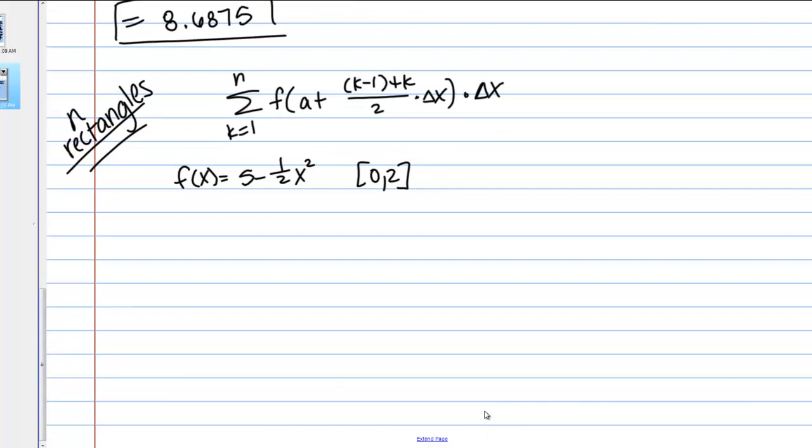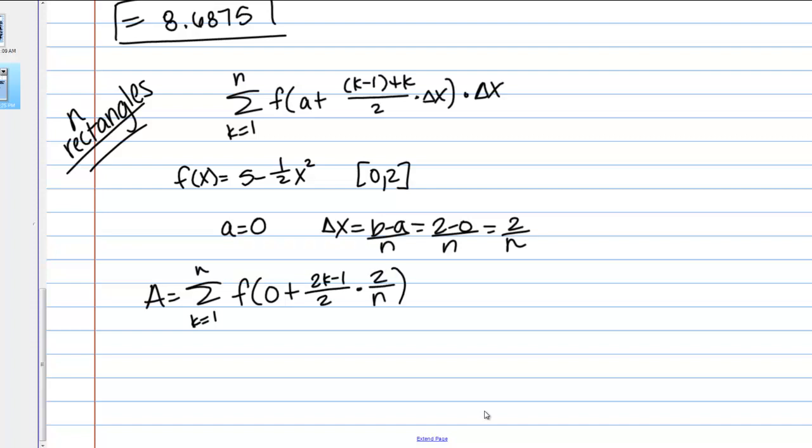Then, if I plug in my information, I'm going to have still A equals 0, and let's figure out delta X. Delta X is B minus A over N, so 2 minus 0 over N, or 2 over N. Then, area equals the sum from k equals 1 to N. F of A, which is 0, plus, once again, I'm going to go ahead and write this as 2k minus 1 over 2 times delta X, which is 2 over N, and then times 2 over N.